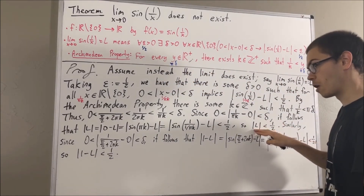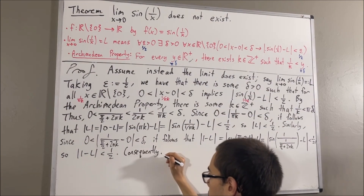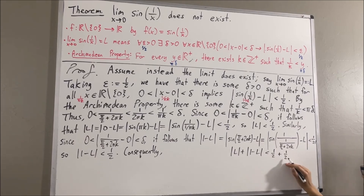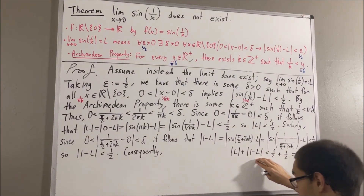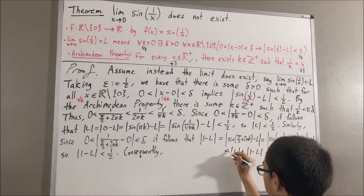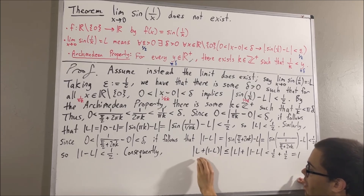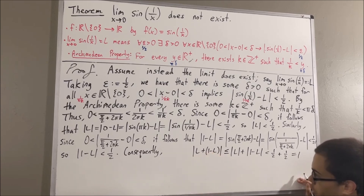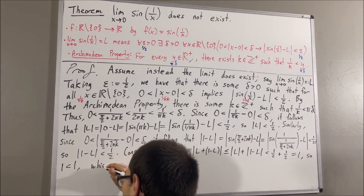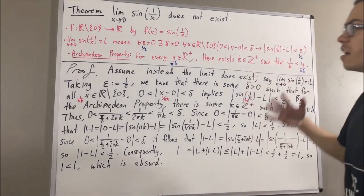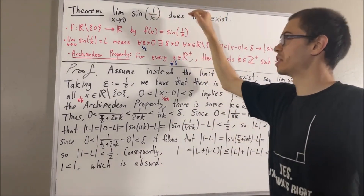So we see that the absolute value of L is less than one-half and the absolute value of 1 minus L is less than one-half. Therefore, absolute value of L plus absolute value of 1 minus L must be less than one-half plus one-half, which equals 1. But by the triangle inequality, we know that this is greater than or equal to the absolute value of L plus 1 minus L. Performing L plus 1 minus L, the L's cancel, giving absolute value of 1, which equals 1. So this tells us that 1 is less than 1 — a contradiction. Our assumption that the limit does exist led us to a contradiction, so we must instead have that the limit does not exist.